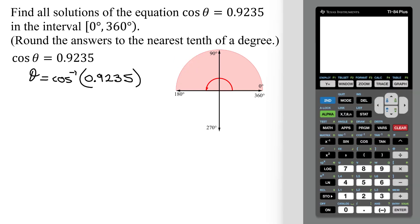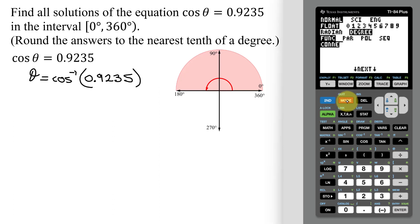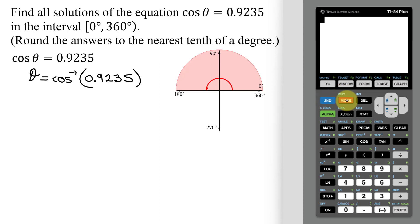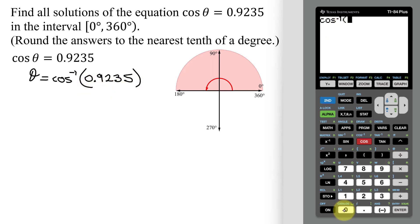Here is my calculator. It's a TI-84+. I need to make sure I'm in degree mode, so I hit Mode. Notice degree is highlighted — that's what I want. I get back to the home screen by hitting Quit, which is second mode. Now I just need to type this into the calculator. The inverse cosine or arc cosine is in blue above the cosine key, so I hit second cosine, which gives me my inverse cosine. Then I type in 0.9235.